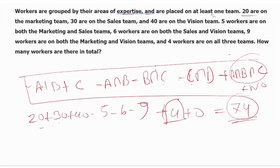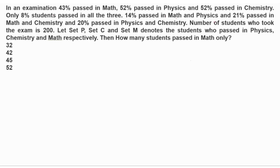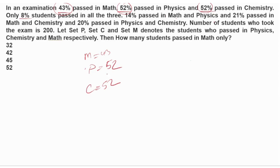Now this is the next example. In an examination, 40 percent passed in math, 52 percent passed in physics, 32 percent passed in chemistry. 43, physics 52, chemistry. 8 students passed in all three. 14 percent passed in both math and physics.